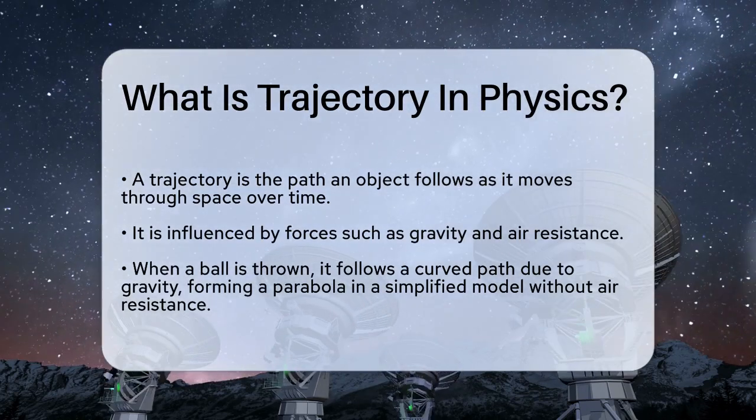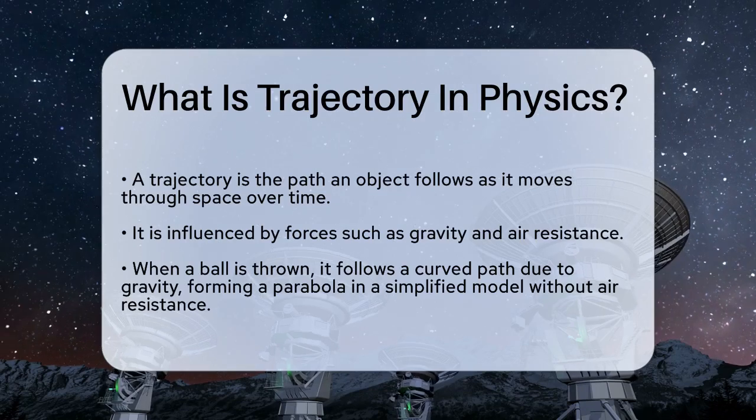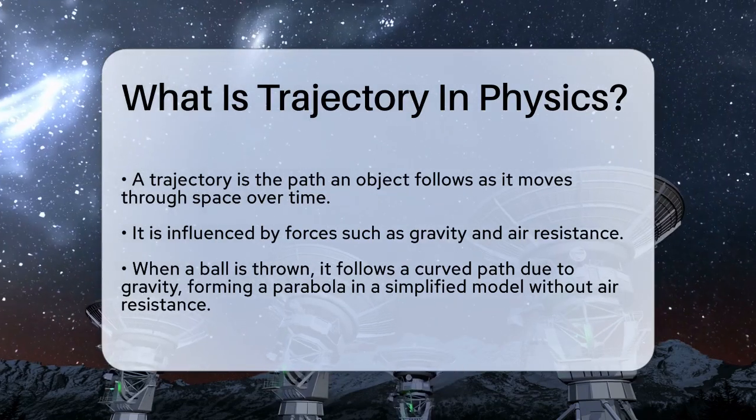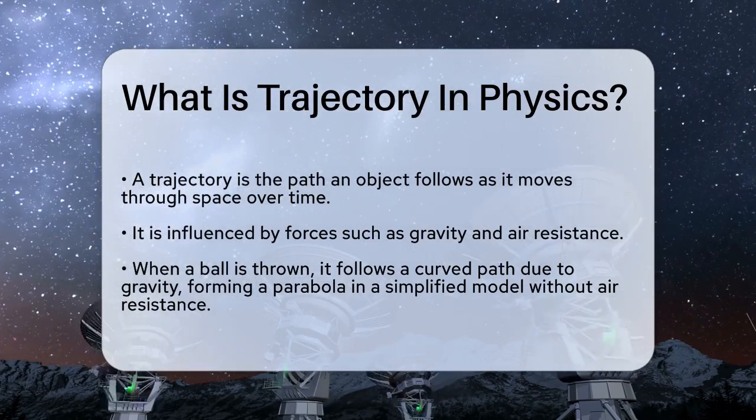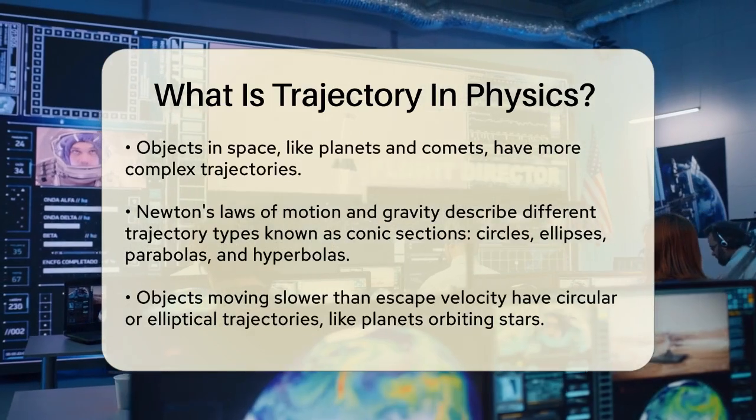Let's break it down. Imagine throwing a ball. The ball doesn't just go straight. It follows a curved path. This curve is due to the force of gravity pulling the ball downwards. In a simple model where we ignore air resistance, this path forms a parabola, a U-shaped curve.